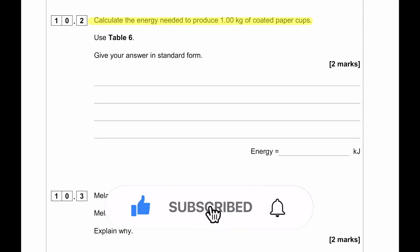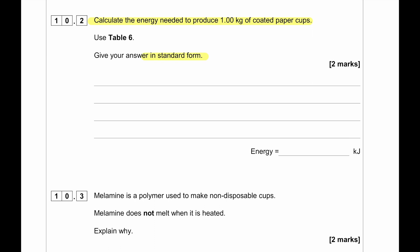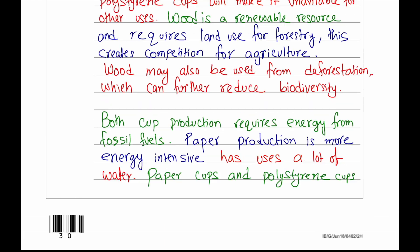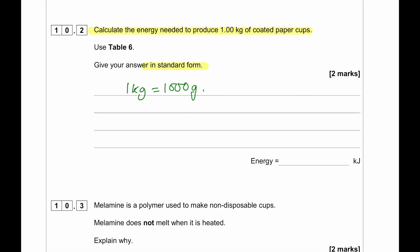Calculate the energy needed to produce 1.00 kg of coated paper cups. Give your answer in standard form. First of all, we need to make a conversion of one kilogram equals to how many grams. One kg equals to 1000 grams. And since each paper cup has a mass of 8.3 grams, it will be 1000 divided by 8.3, which will then give us the number of cups. Then what we can do, after we get the number of cups, we can multiply each of them requiring 550 kilojoules. And that gives us 6.63 into 10 to the power of 4 kilojoules.